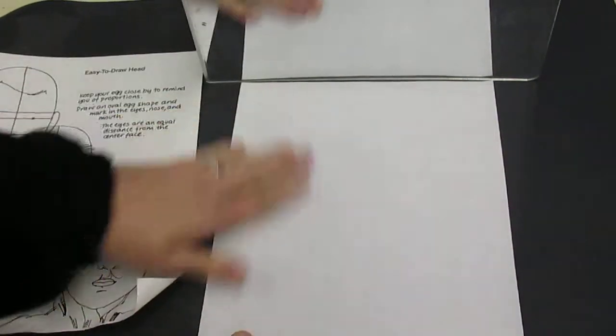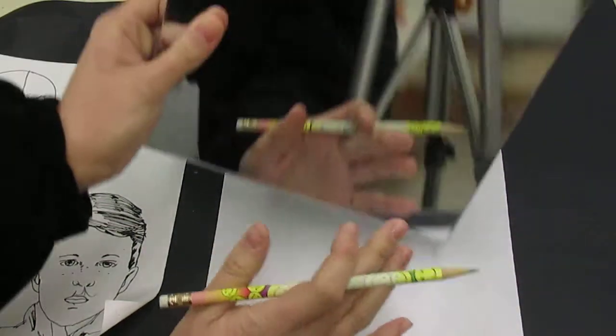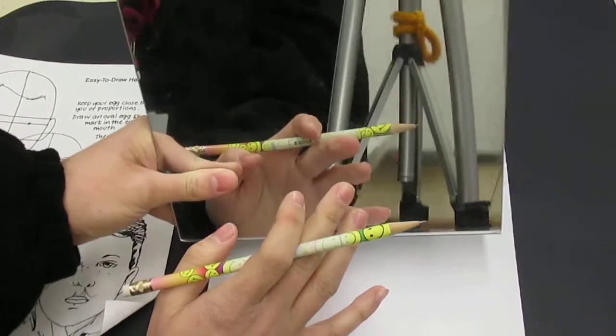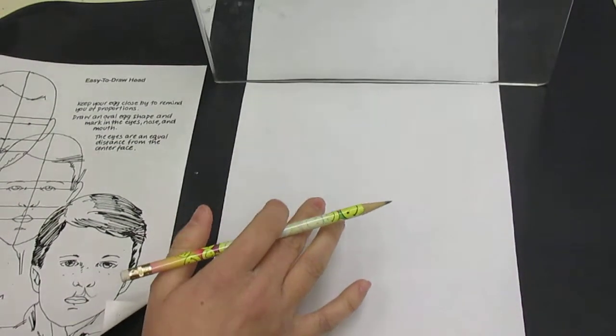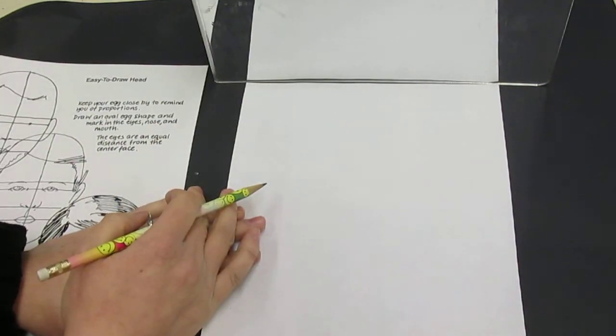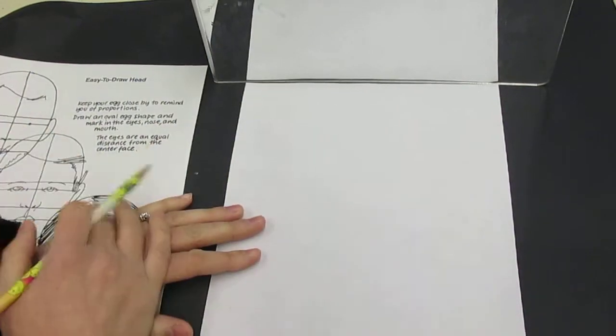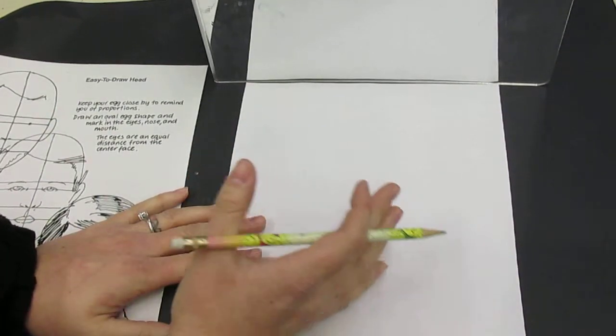You want to get a mirror and when you work with portraiture, you want to be actually looking at yourself in the mirror because you don't want to draw what you think you look like and you don't want to draw off memory, at least in the beginning when you're first learning how to draw a portrait of somebody.